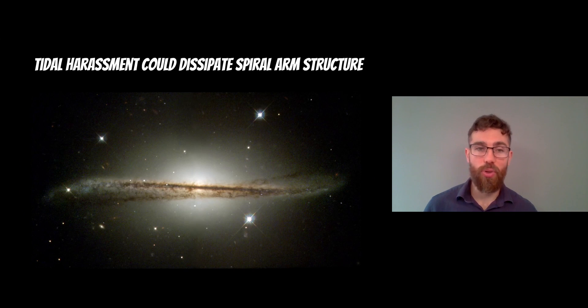They can lose their spiral arms due to tidal harassment. What does that mean? It means there has been some gravitational interaction by nearby galaxies that has distorted them and it can disrupt those spiral arms and dissipate them. So there could be some tidal harassment, which has meant that their spiral arm structure has been lost.